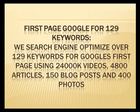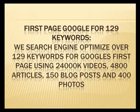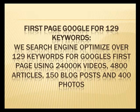We also include the first page of Google for 129 keywords. We search engine optimize over 129 keywords for Google's first page using 24,000 videos, 4,800 articles, 150 blog posts, and 400 photos.